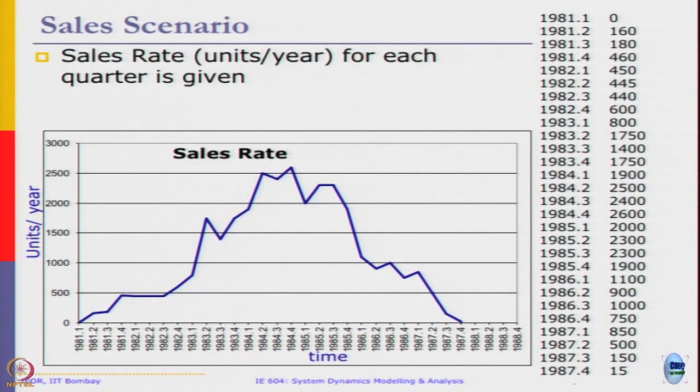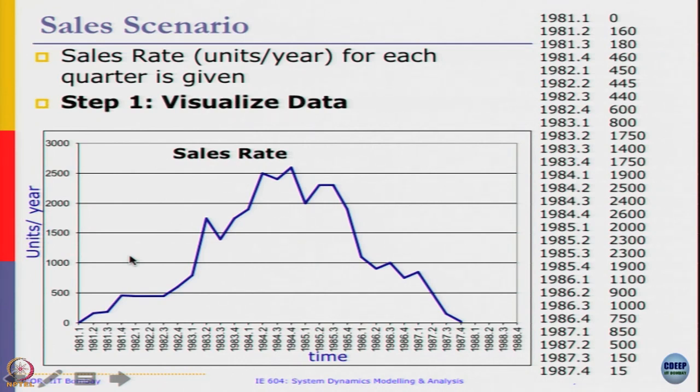Suppose the sales rate, that is the units per year for each quarter, is given in the following table. The sales record is from 1981 to 1987, quarter 1 to 4 per year and the units per year is given. And when we plot it, we get a sales rate graph as shown here. Step 1 is once you get the data, we visualize what we want.